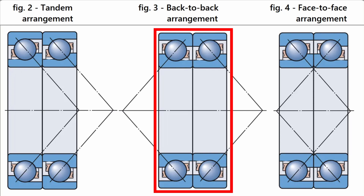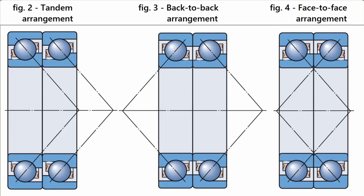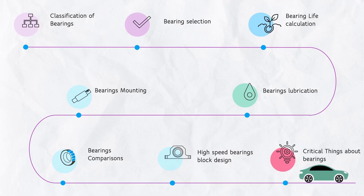Here we will deeply understand angular contact bearings and their arrangements — like back-to-back arrangement, face-to-face arrangement, or tandem arrangement — and how to decide which bearing arrangement is better for which application. Then we will come to know some very critical things, like why the bearing run-in procedure is important and how to do it.